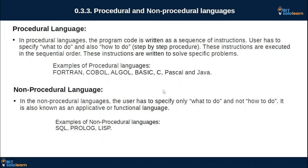If you want to see the programming language, the program is written as a sequence of instructions. The user has to specify what to do and also how to do it. In the procedural language, the program is written as a program. The first thing is to implement the program code. You can run the programming language in the sequence of load. The course of the program executes the instructions on the interpreter.